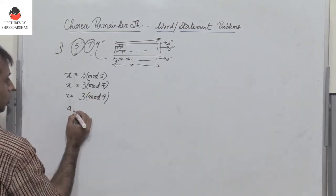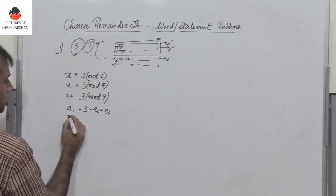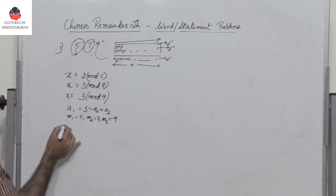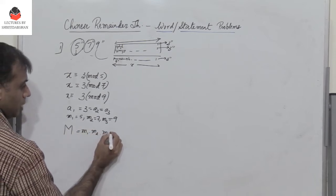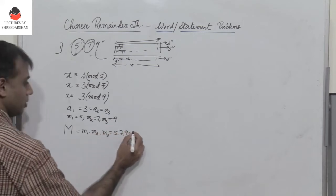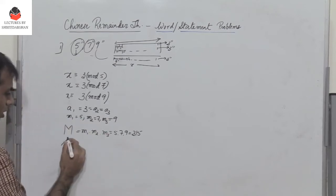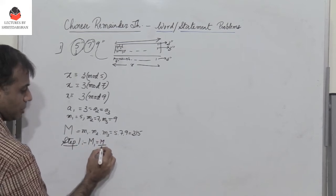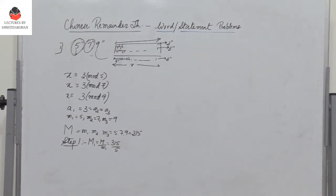Let A1 = A2 = A3 = 3, M1 = 5, M2 = 7, M3 = 9. The first step is to calculate M = M1 × M2 × M3 = 5 × 7 × 9 = 315. Since there are 3 equations there are 3 steps. Step 1: calculate M̄1 = M / M1 = 315 / 5 = 63.